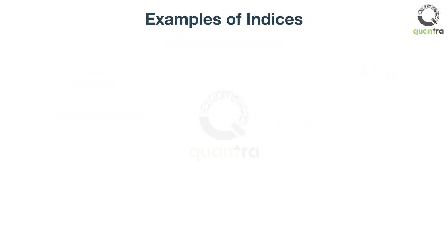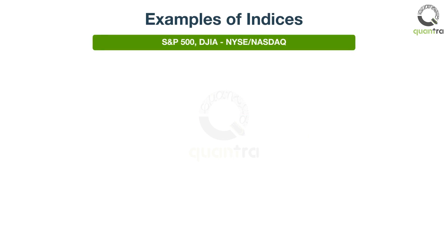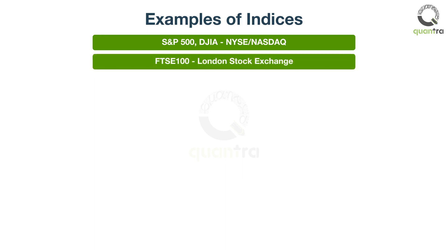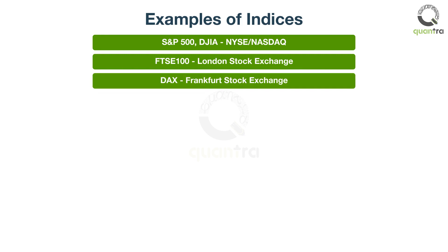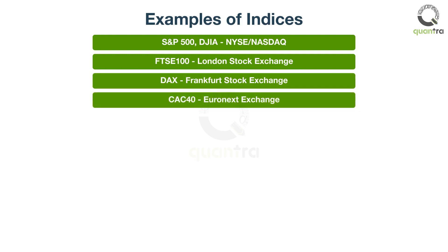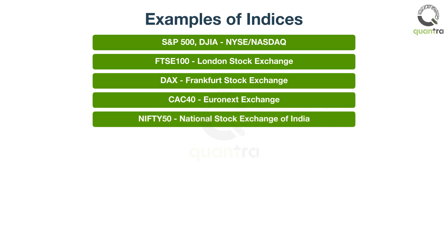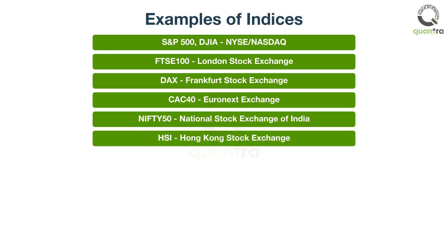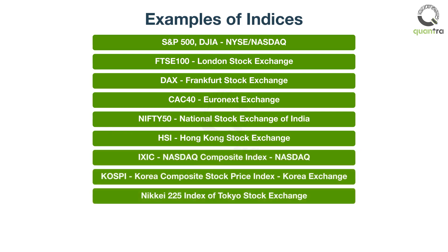Now that you know what indices are and their applications, here are some examples of the world's major indices. They are the S&P 500 and Dow Jones Industrial Average in the US, that track major companies trading on the New York Stock Exchange and NASDAQ; FTSE 100, the index of the London Stock Exchange; DAX of the Frankfurt Stock Exchange; CAC 40, the index of Euronext Paris; Nifty 50, the index of the National Stock Exchange of India; Hang Seng, the index of the Hong Kong Stock Exchange; and others as shown on the screen.